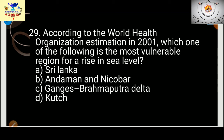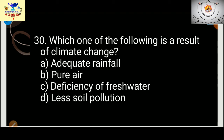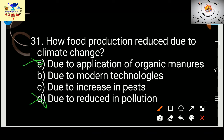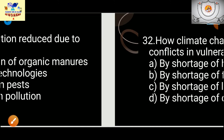Which of the following is a result of climate change? The answer is deficiency of fresh water — drinking water will decrease if climate change continues. How does food production reduce due to climate change? The answer is due to an increase in pests — not due to reduction in pollution, application of organic manure, or modern techniques.